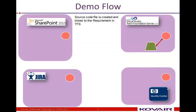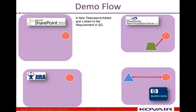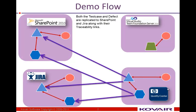The developers create source code and link it to the requirement in TFS. The testers in Quality Center create a new test case and link it to the requirement using a traceability relation. On testing, the test case fails, a new defect is created, and that defect is linked to the test case. By Omnibus, automatically, both the test case and the defect are replicated from Quality Center to SharePoint and Jira — and not just the test case and the defect, but their relationship as well.